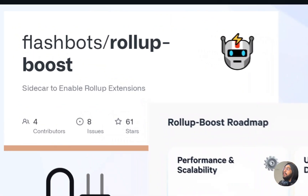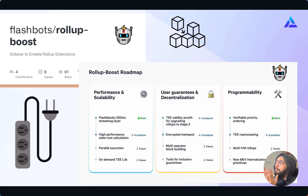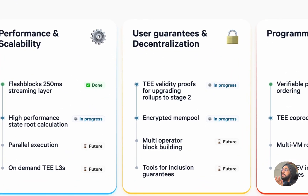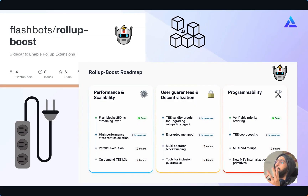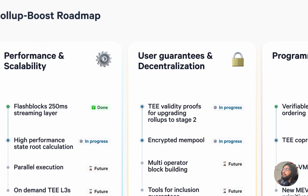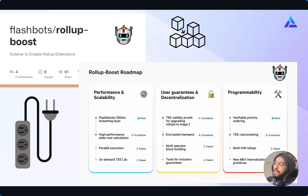Rollup Boost introduces the idea of rollup extensions, which are modular components for upgrading rollups in performance, programmability, and decentralization. These extensions are only the start. The plan is to turn Rollup Boost into a highly modular platform supporting features such as TEE-validated proofs from multi-prover systems, allowing rollups to reach stage 2 easier, fully encrypted mempools, and TEE co-processing power for apps. But before getting into Rollup Boost's working and features, let's discuss what TEE technology is and why there is so much buzz around it.